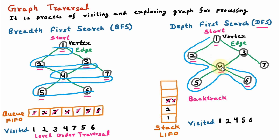We are on vertex 4 again. Visit is already done. We explore its neighbors and find one neighbor which is 3. Before going to vertex 3 we store vertex 4 into the stack. Now we are on vertex 3. We mark vertex 3 as visited. Then we explore — finding its neighbor — and we find one neighbor which is 7. Before going to vertex 7 we store vertex 3 onto the top of the stack, and then we can proceed further.